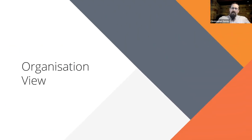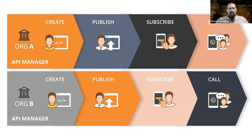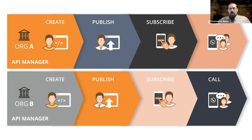If we look at how an organisation's view of API management works — in open banking, lots of the financial institutions are looking to expose their APIs, and the standard process of doing that is: you create, publish, get your third-party developers or internal developers to subscribe to those APIs, and then your end customers can call and utilise those exposed services.